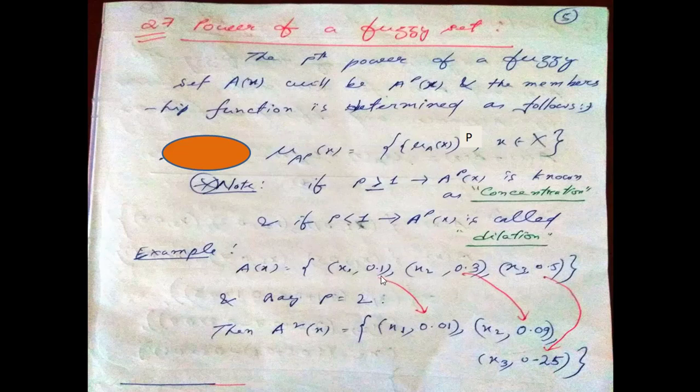We are simply squaring these values. If it is say P equals 5, then that will be 0.1 to the power 5, or 0.2 to the power 5, 0.5 to the power 5, like that. So this is A square (x) for the given fuzzy set A(x).